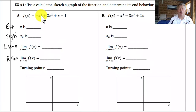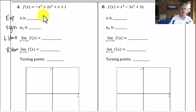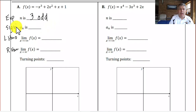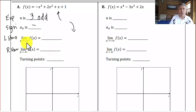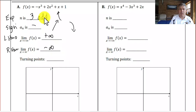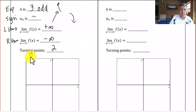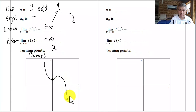In example a, they ask us to sketch a graph of the function and determine its end behavior. Our exponent is 3, which is odd, and the sign on our coefficient is negative. So our end behavior goes in opposite directions — as x approaches negative infinity, y goes to positive infinity, and as x approaches positive infinity, y goes to negative infinity. We have a third-degree polynomial, so we'll have two turning points. With a y-intercept of 1, the graph looks something like that.